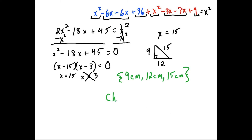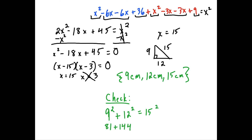To check, we plug into the Pythagorean theorem: 9 squared plus 12 squared equals 15 squared, which is 81 plus 144 equals 225. Indeed, 81 plus 144 is 225, so this checks out. The three sides are 9 centimeters, 12 centimeters, and 15 centimeters.